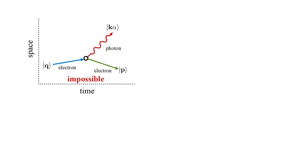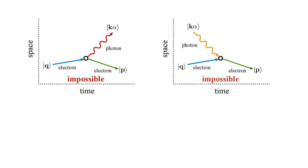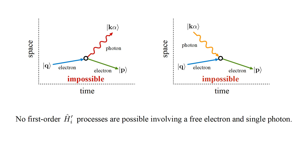In terms of Feynman diagrams, the process where a free electron is destroyed and another free electron and a photon are created is impossible. Likewise for the process where an electron and a photon are destroyed and a new electron is created. Since these are the two types of processes supported by H-hat I-prime, no first-order H-hat I-prime processes are possible involving a free electron and single photon. These types of processes were possible for an electron bound in a hydrogen atom — there is no inertial reference frame where the electron kinetic energy is zero, there is potential energy stored in the proton-electron interaction, and the proton is able to absorb any momentum difference between initial and final states.